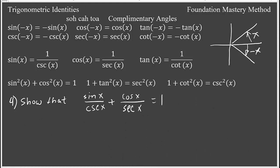Example 4: we have sin x / csc x + cos x / sec x should equal 1. Since 1 over cosecant x is sine x, then sin x over csc x equals sine squared x. And since 1 over secant x is cosine x, then cos x over sec x equals cosine squared x. So we get sine squared x plus cosine squared x, which by our first Pythagorean identity equals 1. We are done.